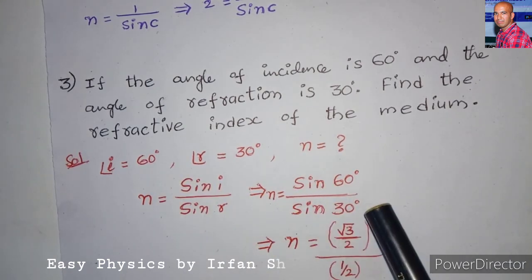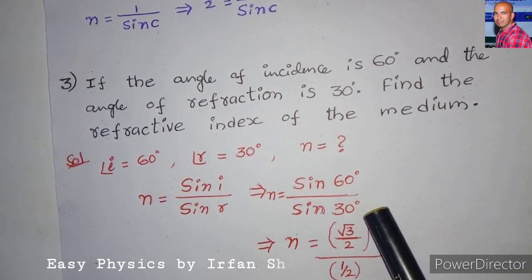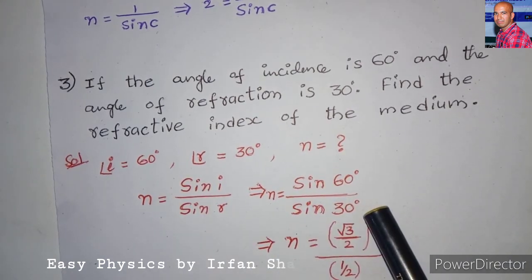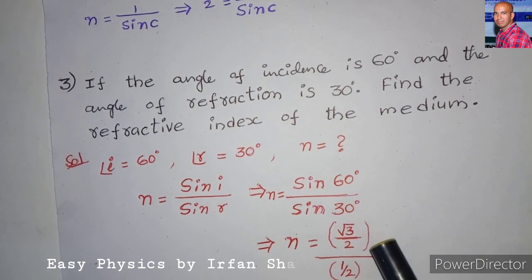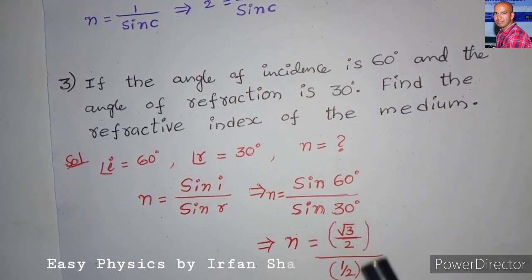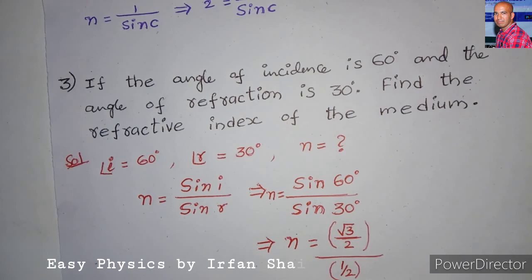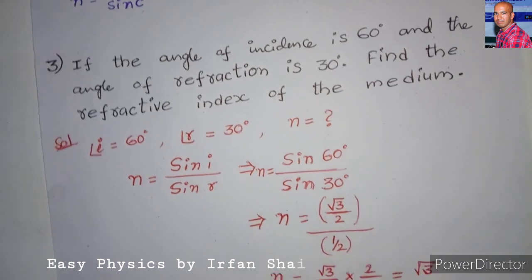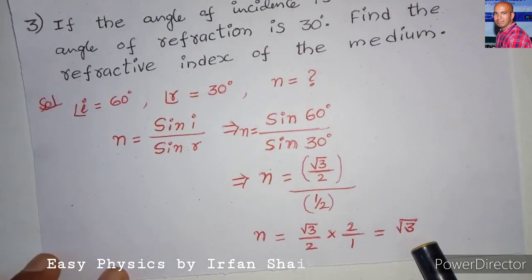Substituting the values, sin 60° = √3/2 and sin 30° = 1/2. By substituting and simplifying, we get the answer as √3.